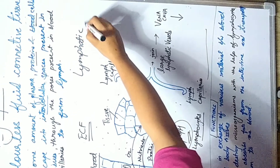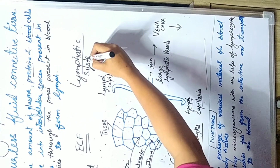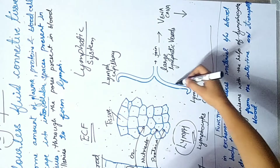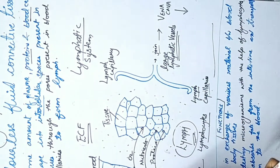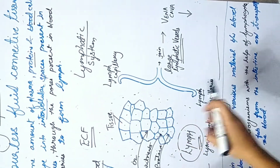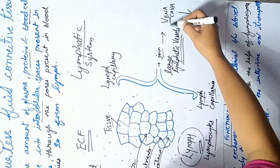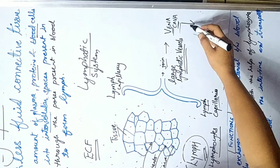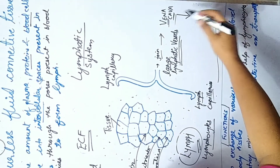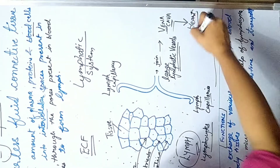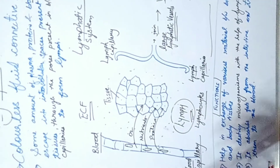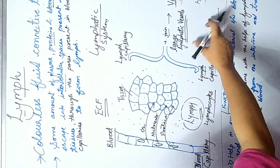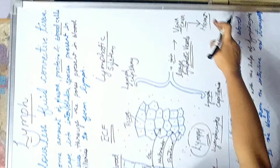The lymphatic system collects all the lymph through minute lymph capillaries, which join to form large lymphatic vessels. These lymphatic vessels collect all the lymph and finally drain it into the vena cava — the larger veins. Through the vena cava, the blood and lymph go into the heart. So lymph flows from around the tissues, to lymph capillaries, to lymphatic vessels, to the vena cava, and then to the heart.